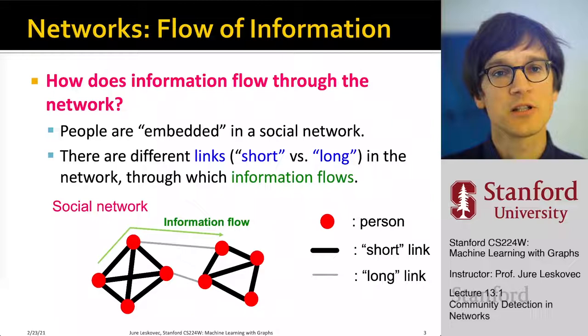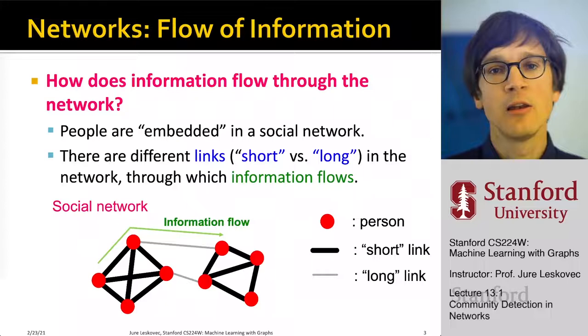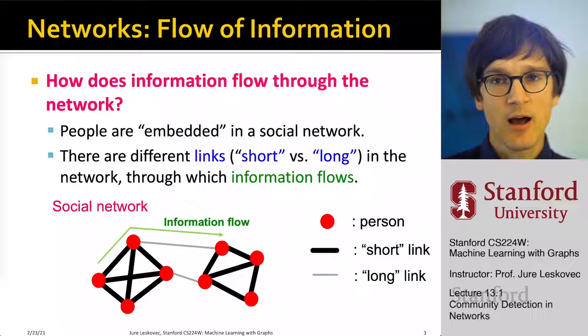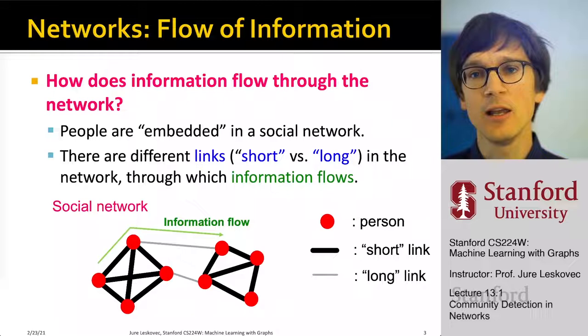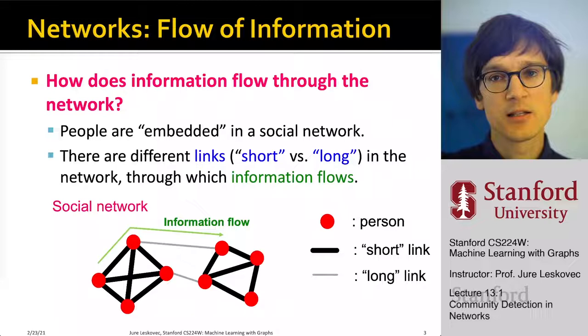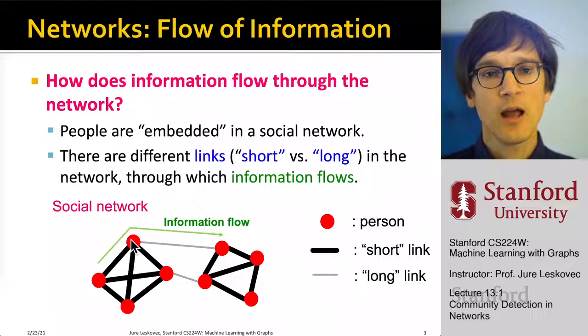The question is: how does information flow through networks? In a social network, people are connected and information flows over different links. We can call these links short and long — short ones are local, representing strong friendships, and long links connect us to acquaintances and colleagues we meet less often.